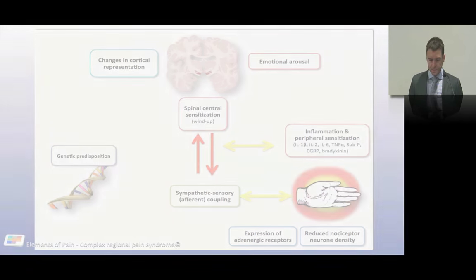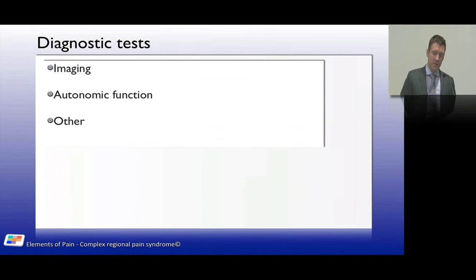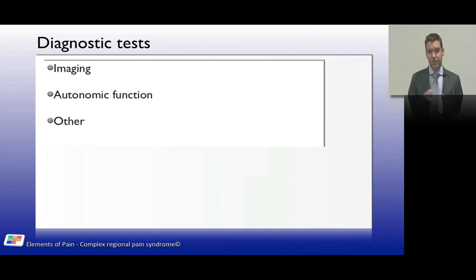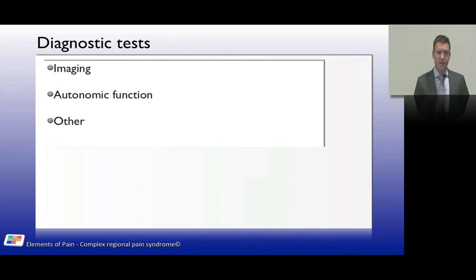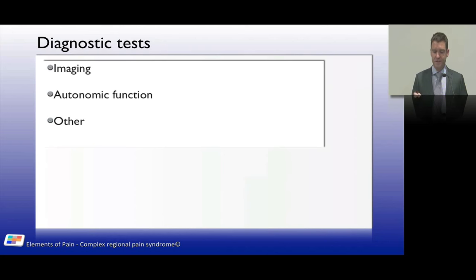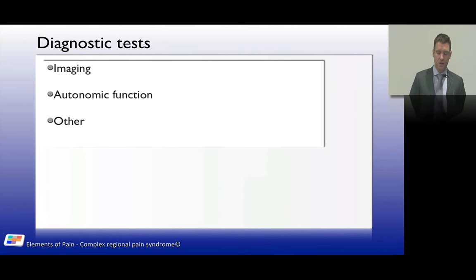Regarding diagnostic tests, imaging including X-rays, MRIs, and bone scans can be done, along with autonomic function testing. Measuring skin temperature differences — with greater than 2.2 degrees variation having high specificity — is one useful test. However, CRPS is fundamentally a clinical diagnosis.